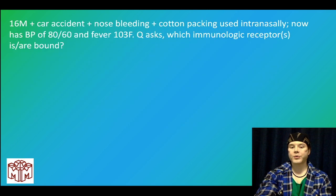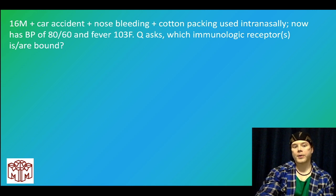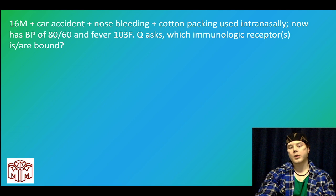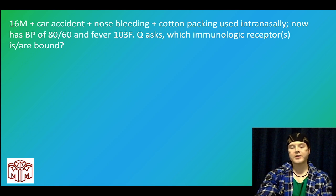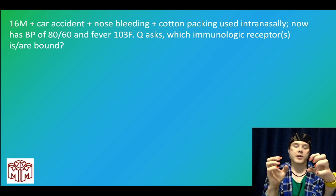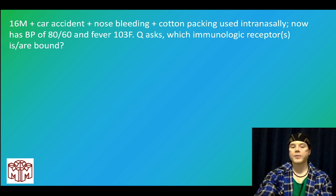Practice questions. A 16-year-old in a car accident with a nosebleed has cotton packing inserted intranasally, blood pressure 80/60, fever 103. Which immunologic receptors are bound? This is toxic shock syndrome — the answer is MHC2 and T cell receptor. TSST is a superantigen that bridges MHC2 on the macrophage with the T cell receptor on the T cell, causing cytokine release (TNF-alpha causes low blood pressure and increased vascular permeability; IL-1 causes fever). Do not confuse with endotoxin, which binds CD14 (toll-like receptor 4) on macrophages.